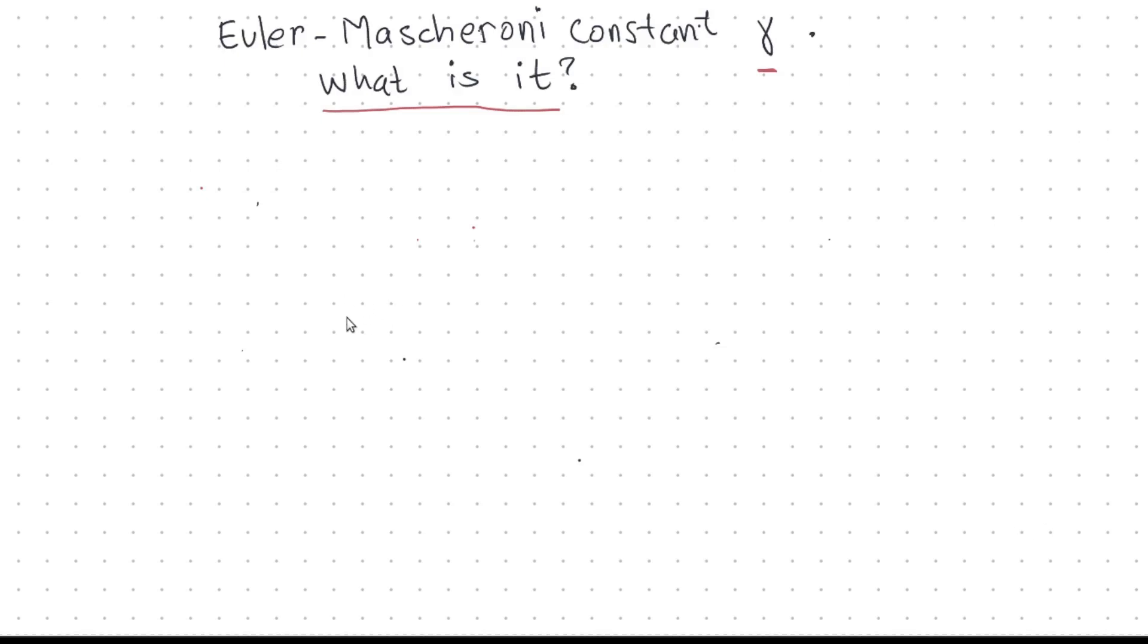Hello, mathematical friends. Today, I want to talk about the Euler-Mascheroni constant, gamma. What exactly is this constant? Where does it come from? We won't do any proofs today. I just want to talk about it and give you an imaginative picture about gamma.